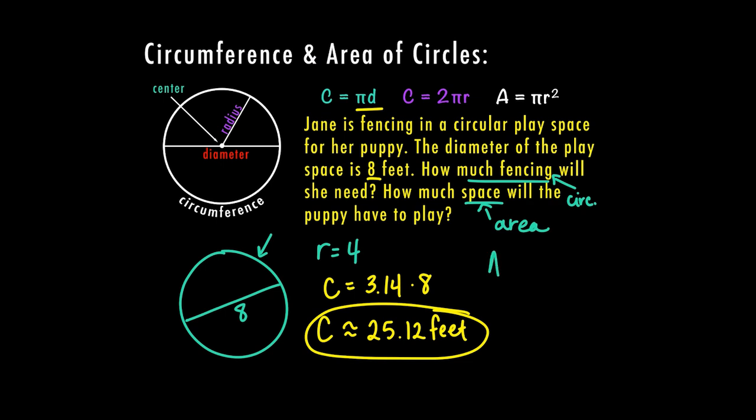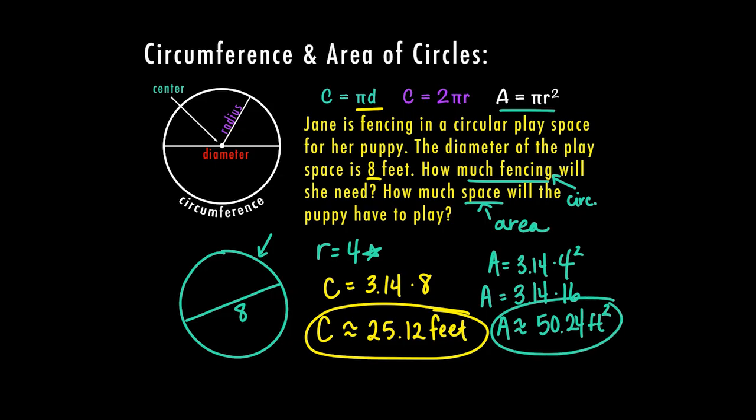Now I need to find the area of this play space. And I'm going to use this formula. So 3.14 times the radius, which we already figured out was four. So four squared, that means that I am solving 3.14 times 16. So if I multiply 3.14 times 16, it's actually doubling what I multiplied times eight. So that would be approximately 50.24 feet squared. So there's the area.